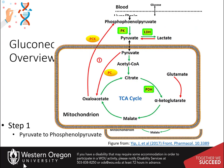The most complicated part of gluconeogenesis is converting pyruvate back to phosphoenolpyruvate. This process takes the action of three enzymes: pyruvate carboxylase, located in the mitochondrial matrix; aspartate aminotransferase, located in the mitochondrial matrix and the cytosol; and phosphoenolpyruvate carboxykinase, located in the cytosol.